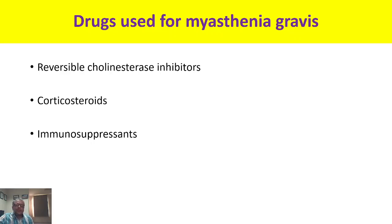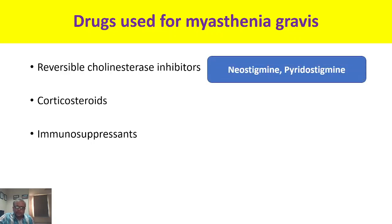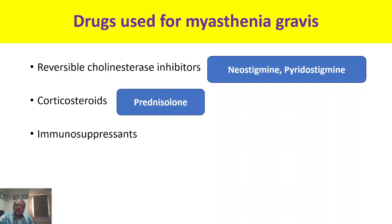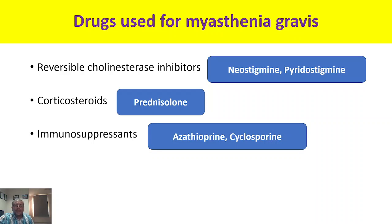Cholinesterase inhibitors are divided into two types: reversible and irreversible. Irreversible are organophosphate compounds with no therapeutic value. Among reversible cholinesterase inhibitors, the key agents are neostigmine and pyridostigmine. For corticosteroids, prednisolone and similar compounds are used; for immunosuppressants, azathioprine and cyclosporine.